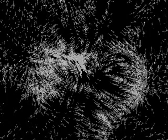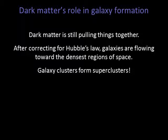The arrows on this diagram indicate the motions of individual galaxies over a space of hundreds of millions of light years. We can see that the galaxies flow in regions where the density of galaxies is already high.